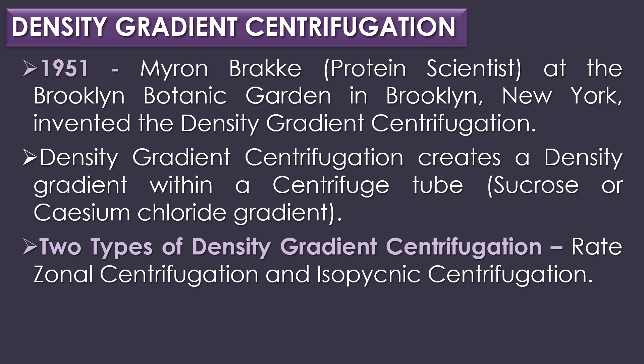Density Gradient Centrifugation involves creating a density gradient within a centrifuge tube. This gradient is achieved by layering solutions of different densities, typically in the form of sucrose or cesium chloride gradients. The sample containing the molecules to be separated is carefully layered on top of the density gradient. Two types of Density Gradient Centrifugation are Rate Zonal Centrifugation and Isopycnic Centrifugation.